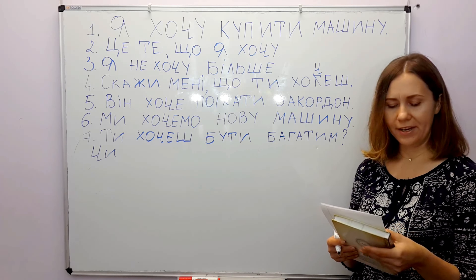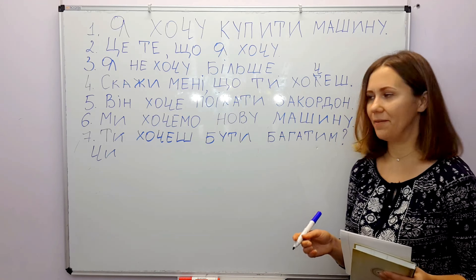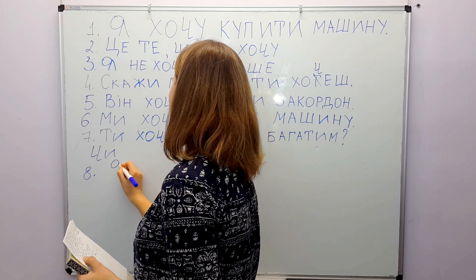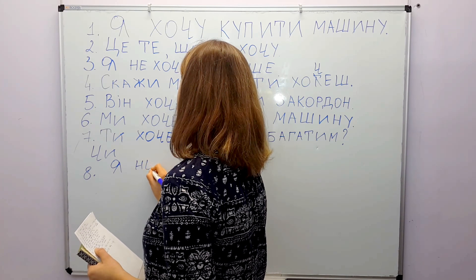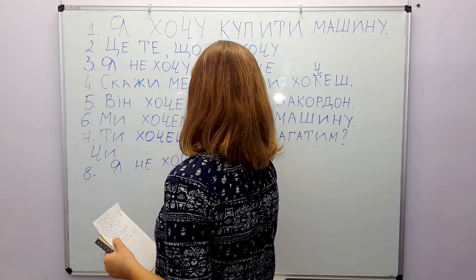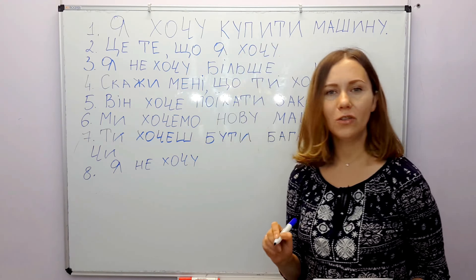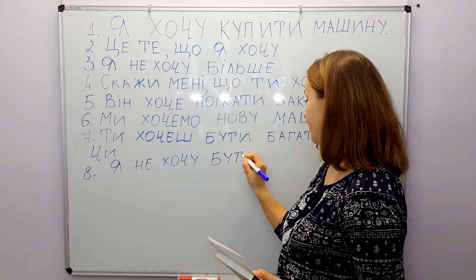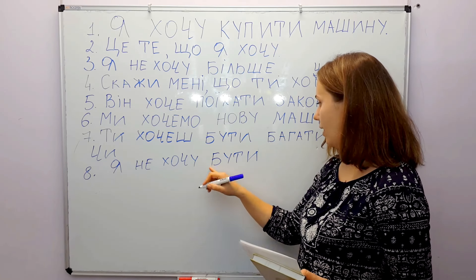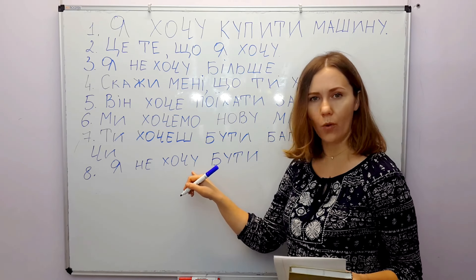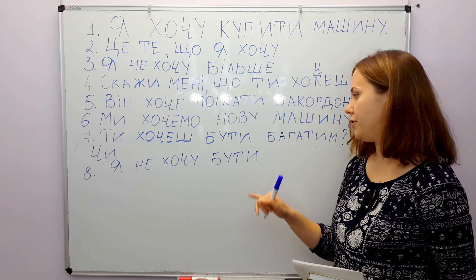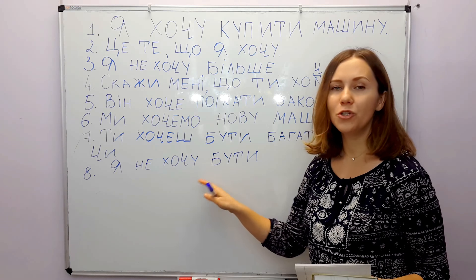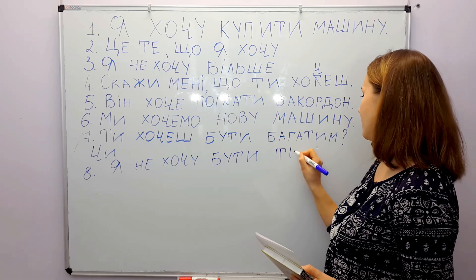I don't want to be here. Я не хочу — I don't want. To be here — бути тут. Here we have one more verb after 'to want', that's why we don't change it — we use it as an infinitive. Я не хочу бути тут.